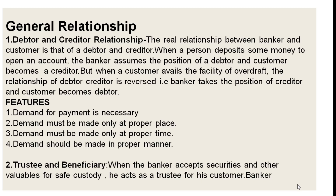Let us see the first general relationship: debtor and creditor. The real relationship between banker and customer is that of a debtor and creditor. When a person deposits some money to open an account, the banker assumes the position of a debtor and the customer becomes a creditor. But when a customer avails the facility of overdraft, the relationship of debtor-creditor is reversed — that is, the banker takes the position of creditor and the customer becomes the debtor.